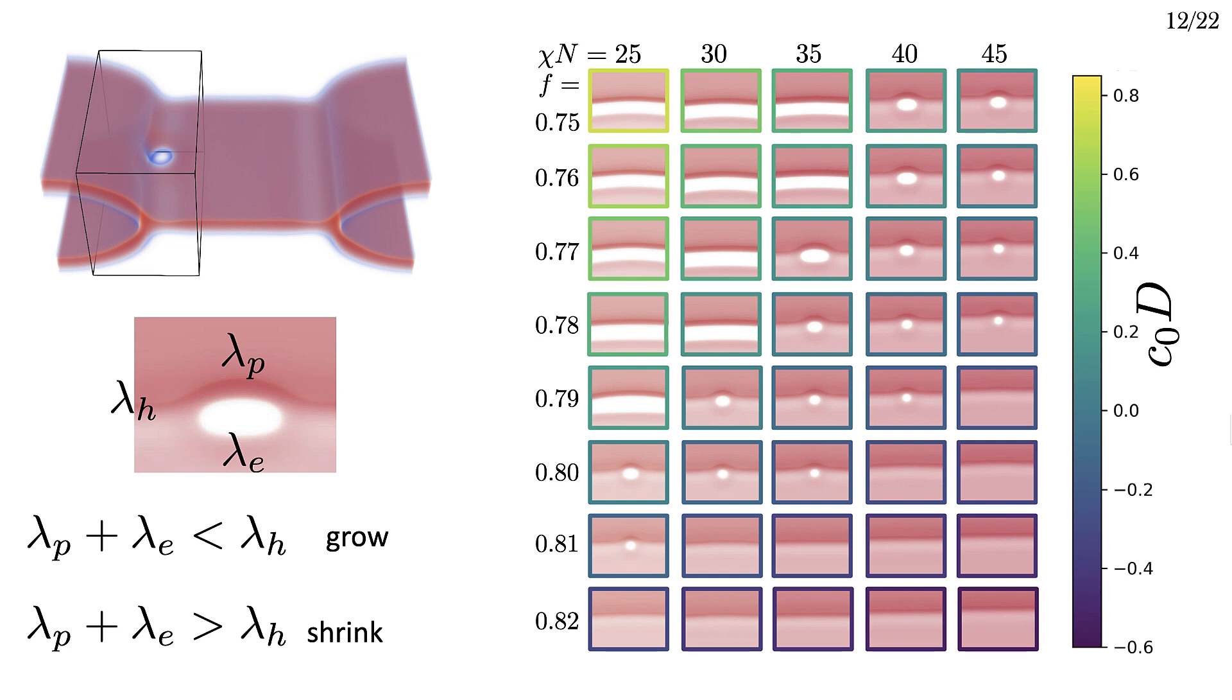The important parameters in SCFT are Chi N, the Flory-Huggins parameter, which controls the strength of head-tail repulsion, and F, which gives the fraction of the lipid that's composed of tails, i.e. F gives the lipid asymmetry.